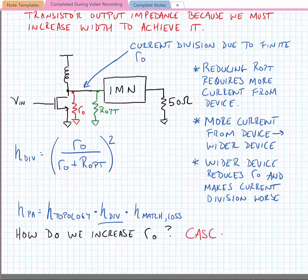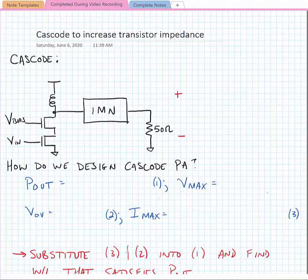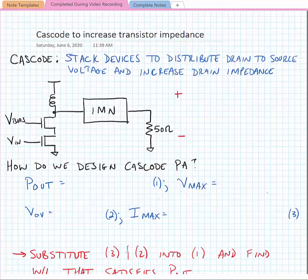Well, maybe the simplest thing to do is to use a cascode. Here in the drawing we've drawn a simple cascode where we've just stacked two devices together instead of having a single device. With the cascode, we're going to stack devices to distribute the drain to source voltage, which allows us to use a higher supply voltage V_DD, and it also increases the output resistance, the effective output resistance of the transistor r_0, to a higher value.